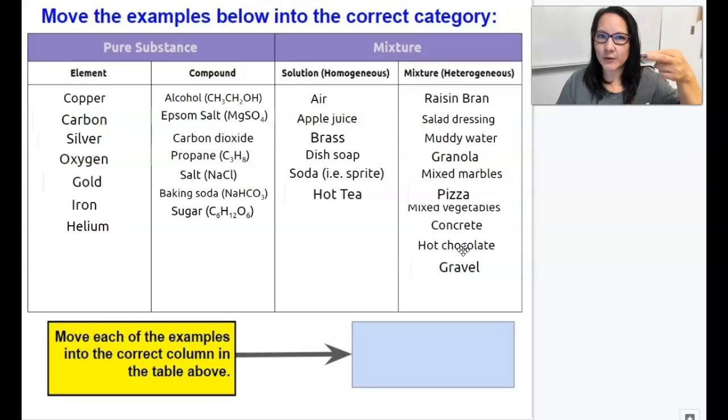Hot chocolate, because if you tried to shine a beam of light through the hot chocolate, because there's milk in there, it would break up that beam of light, and that's called the Tyndall effect. So that makes it a colloid, which puts it under the heterogeneous column.